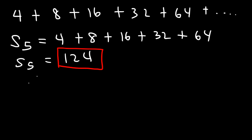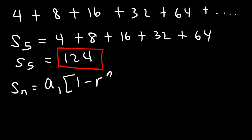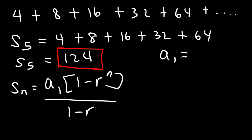Now sometimes this might be a very large number — it could be like S of 20 or S of 50. So you need a formula that can help you calculate the partial sums. The formula is a sub 1 times 1 minus r to the n, over 1 minus r. So a sub 1 is the first term in the geometric series, and the first term is 4.